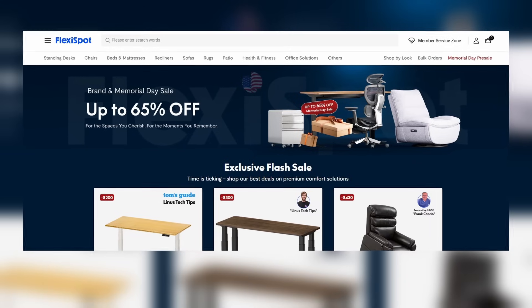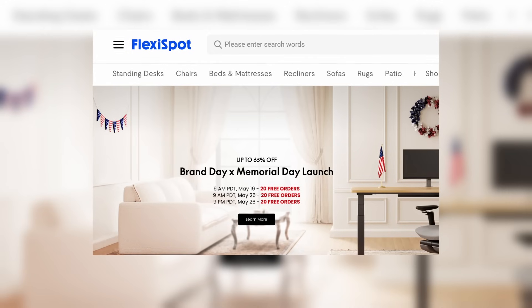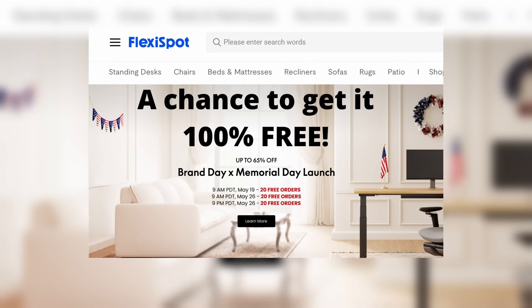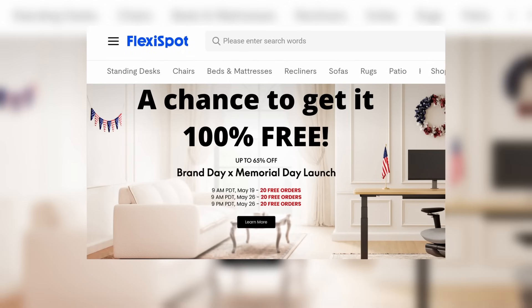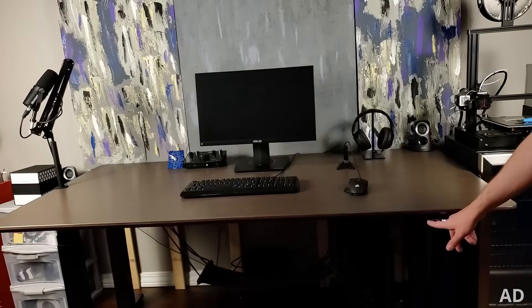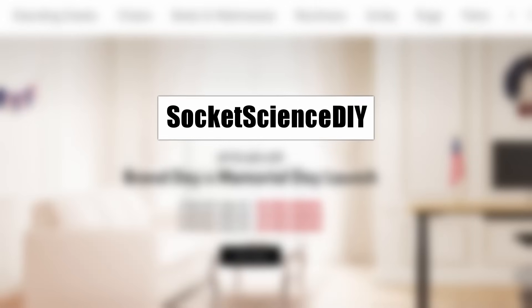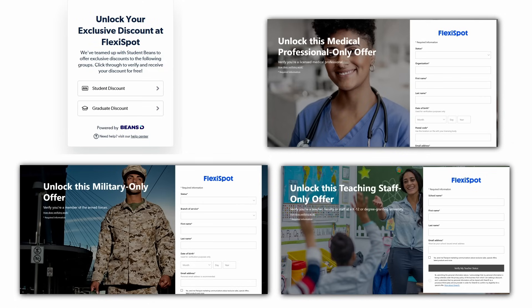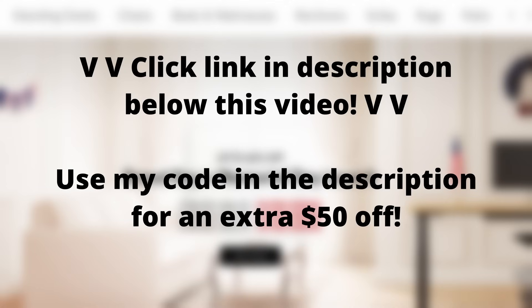FlexiSpot is currently running special brand day and Memorial Day sales up to 65% off. Starting on May 26th at 9 a.m., the first 20 orders will have a chance to get it 100% free, so don't miss out on the chance to get your own E7 Plus four-leg standing desk. Shop now, and if you liked it, leave a note saying Socket Science DIY at checkout and use my coupon code down in the video description for an extra $50 off. That would mean a lot and really help support the channel. As a socially responsible company, FlexiSpot also offers special discounts to military, students, doctors, and more. Click the link in the video description to check out this offer now, and as always, thank you for watching.